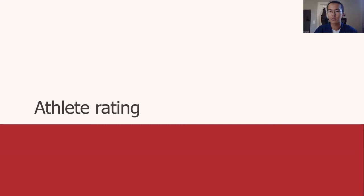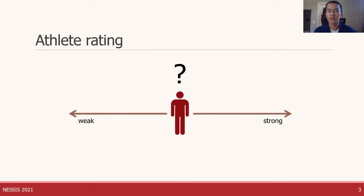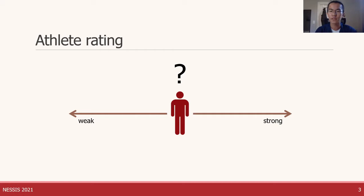Let's jump directly into the problem of athlete rating at the core of this project. When rating athletes, our question is simple: how do we translate an athlete's observed athletic performances into some sort of summary of how good that athlete really is? There are all sorts of reasons to do this, from figuring out who's most likely to medal in the next Olympic games to settling a kitchen table argument. Athlete rating is a well-studied problem — most of you might be familiar with ELO, Mark's Glicko, or whatever 538 is up to.